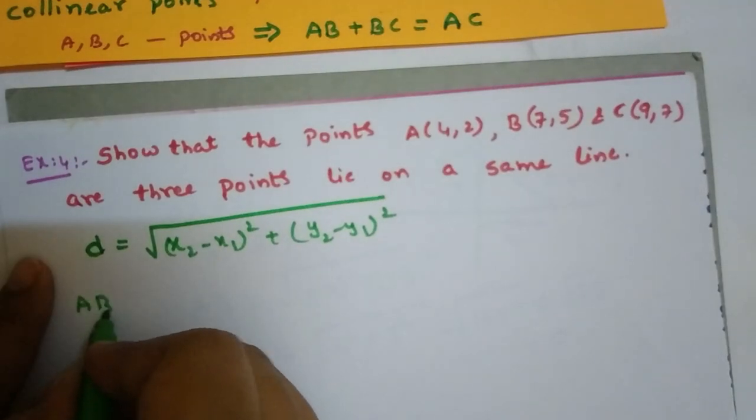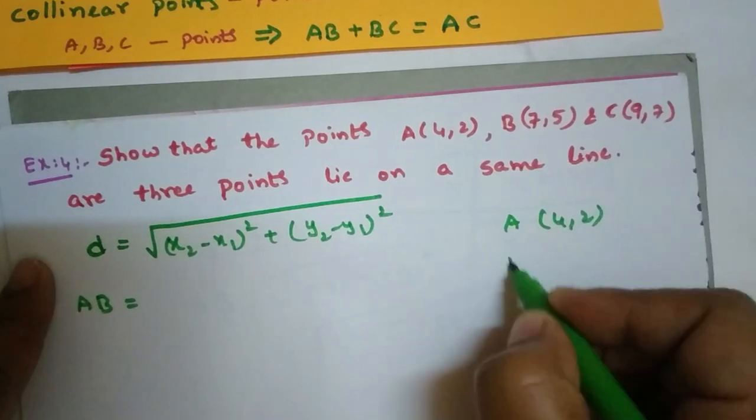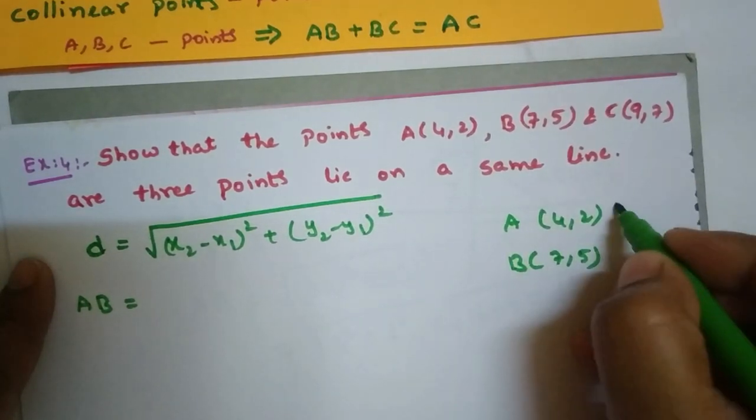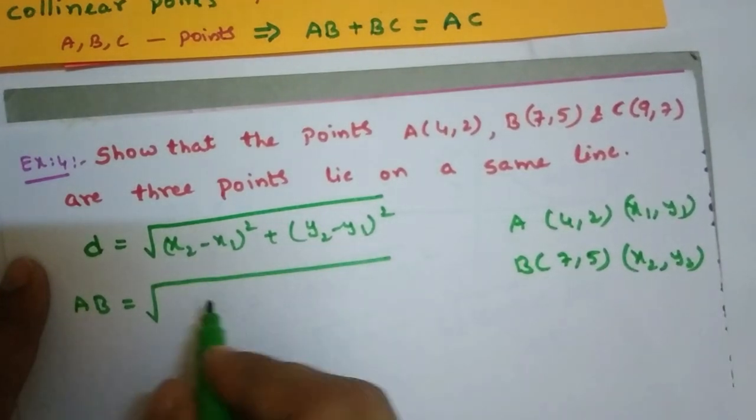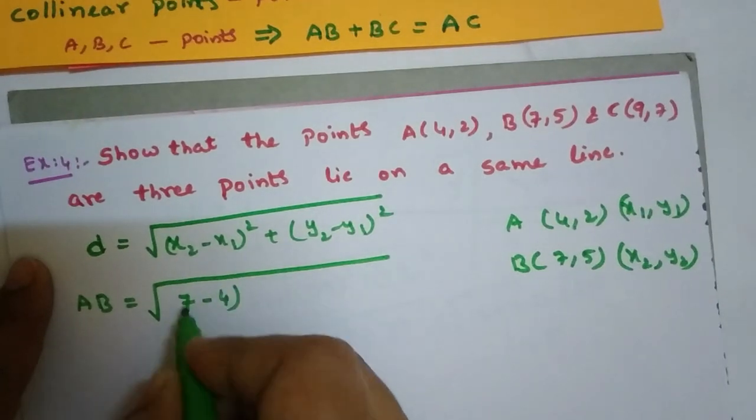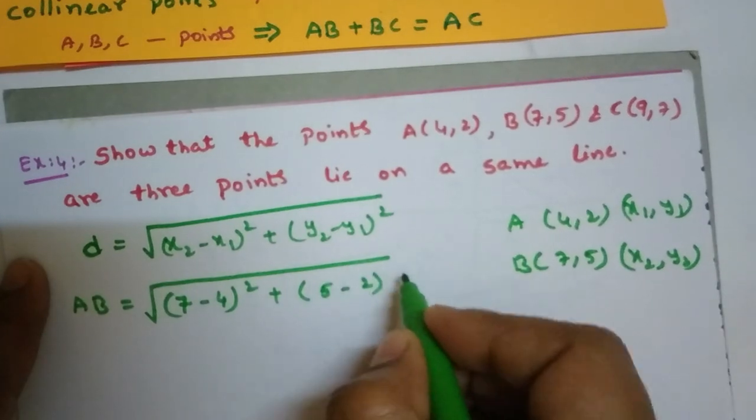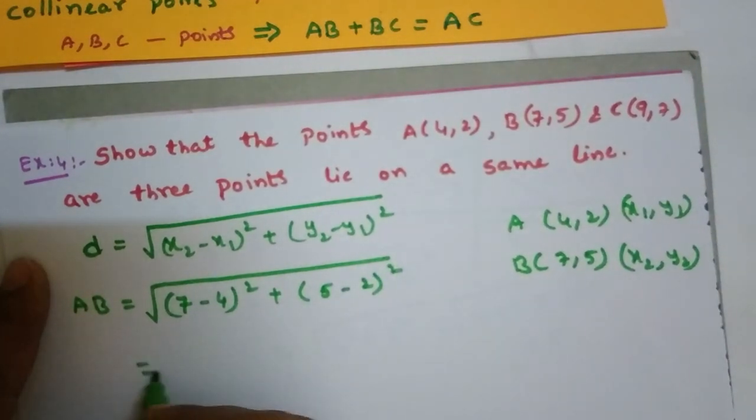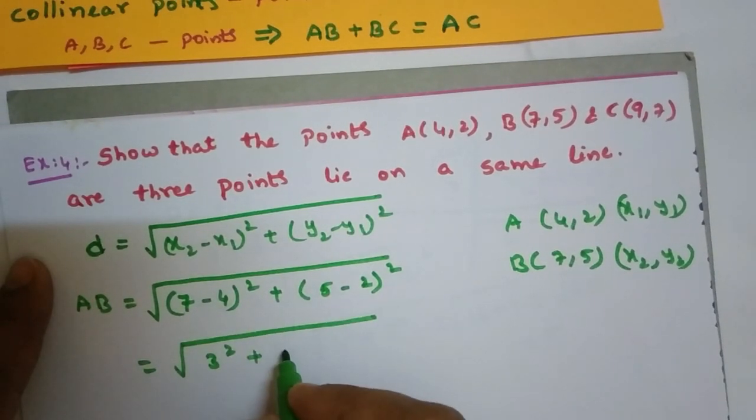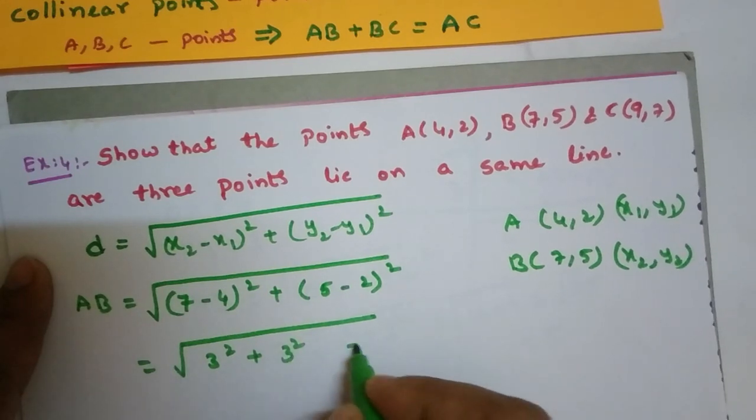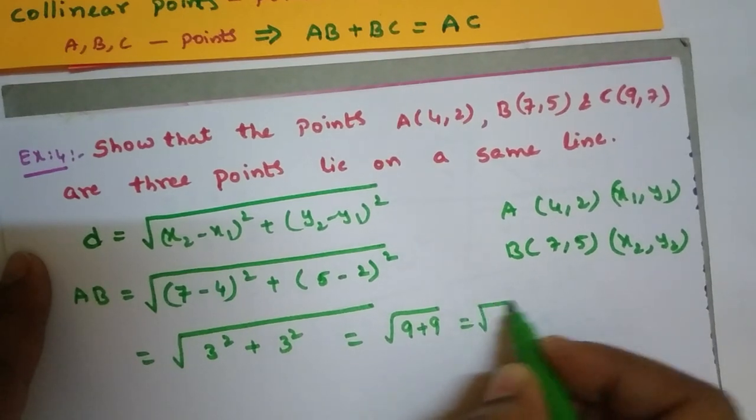First, AB distance. Consider A(4,2) and B(7,5). This is x1, y1 and x2, y2. Square root of (7 minus 4) whole square plus (5 minus 2) whole square equals square root of 3 square plus 3 square, equals square root of 9 plus 9, equals root 18.